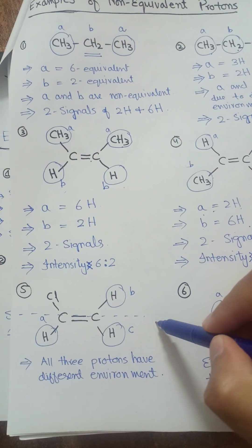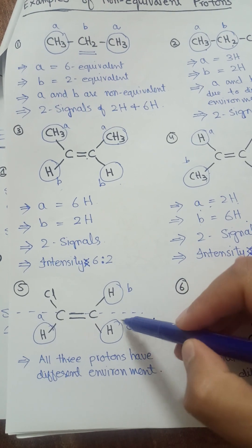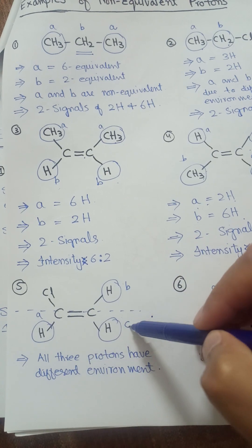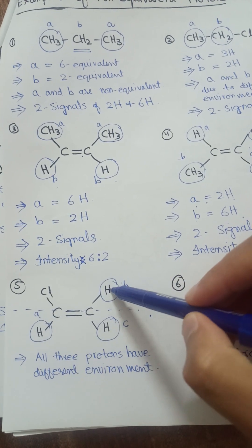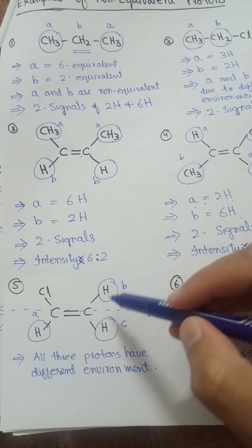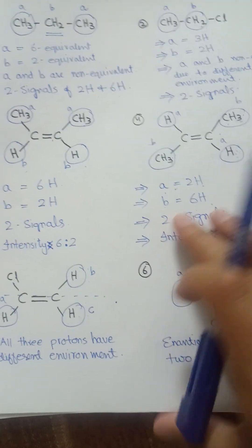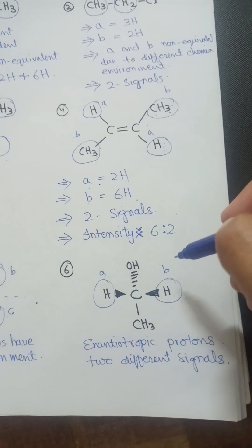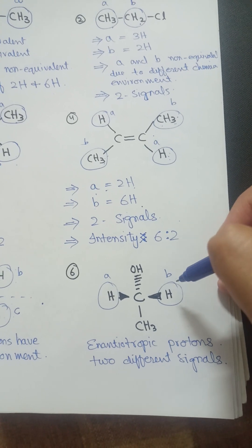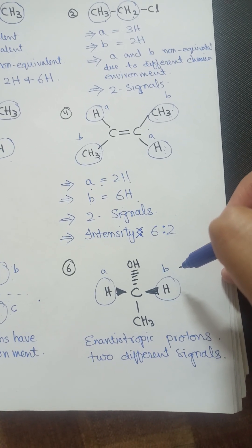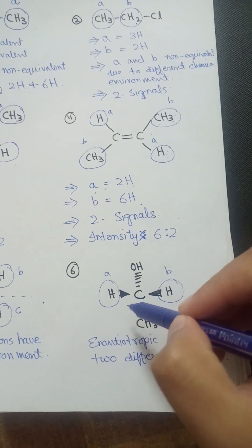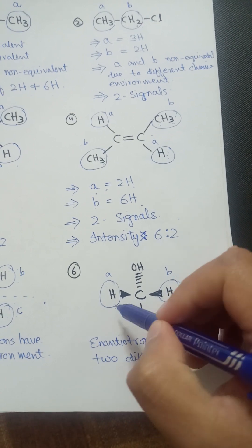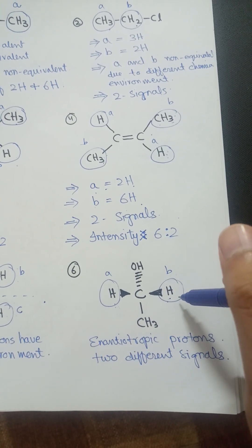In this case, all three proton environments are different, so they are represented with A, B, and C — giving three signals. Here is another example involving enantiotopic protons. Enantiotopic protons are in different chemical environments, so these two enantiotopic protons will produce two different signals.